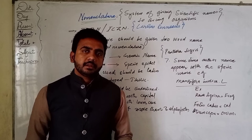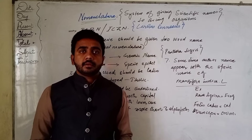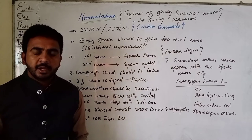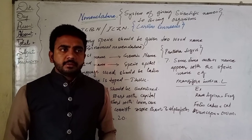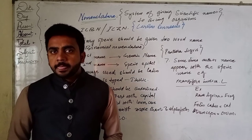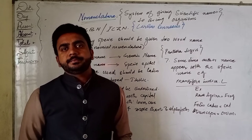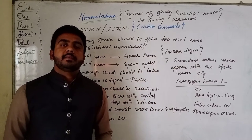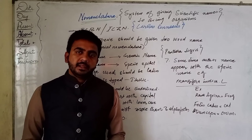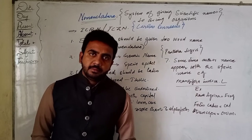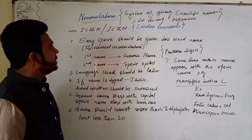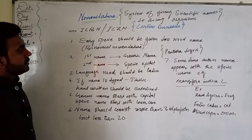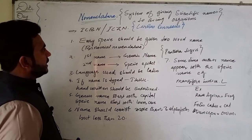If we consider the name of any organism, it consists of two names: one is the local name used in a particular locality, which can be in any language, and the other is the scientific name, which is a standard name to be followed by all speakers of different languages. This system is what is called nomenclature.